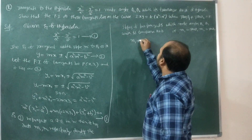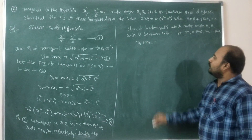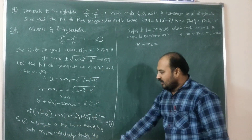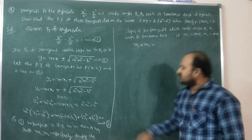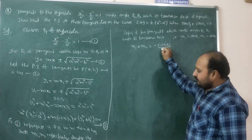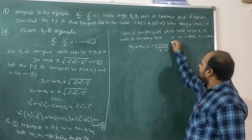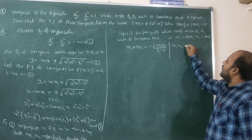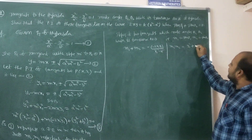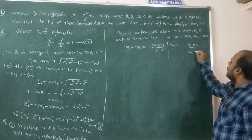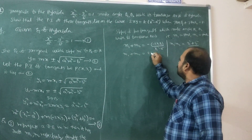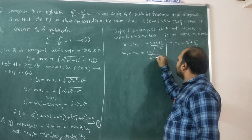Sum of the slopes: m₁ + m₂ = -b/a, comparing with the standard quadratic am² + bm + c = 0. Here, m₁ + m₂ = -(-2x₁y₁)/(x₁² - a²) = 2x₁y₁/(x₁² - a²). Product of roots: m₁·m₂ = c/a = (y₁² + b²)/(x₁² - a²).